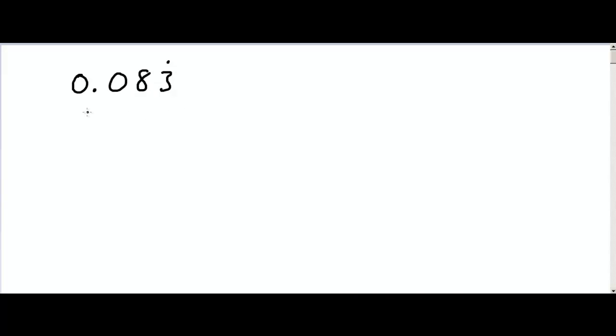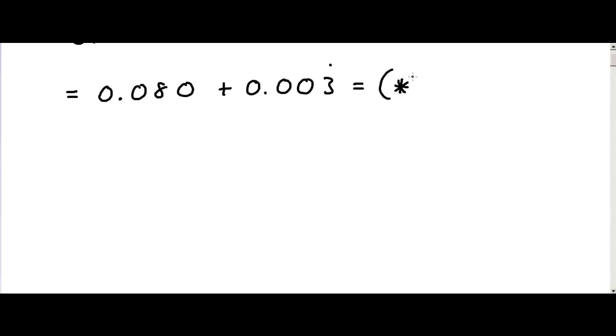First of all, we need to know that this value is 0.080 plus 0.003 recurring. Now, let's make this equal to some value for the time being, and let's focus on this number over here.